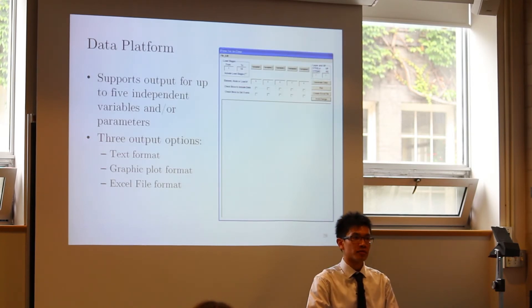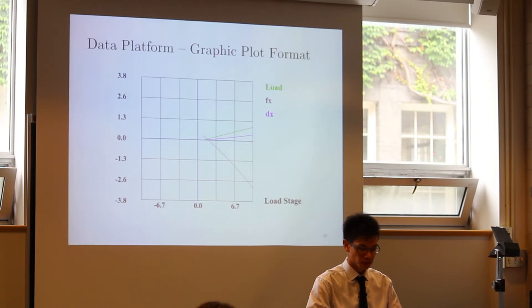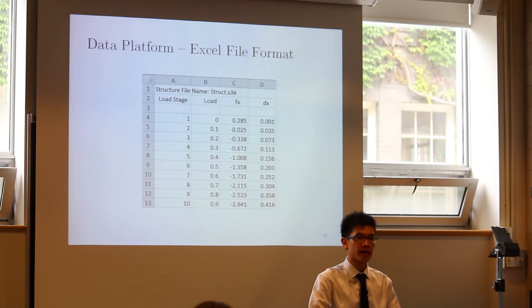Next, we have the data platform dialog, which was developed in part by Akira. This is used to extract data for up to five unique variables and or parameters at a time. And users have three options for exporting the data. It can either be presented in a raw text format within the rich text box below. Accordingly, it can also be displayed as a linear plot. Or lastly, it may be exported as a row and column separated format that can be opened by spreadsheet software.